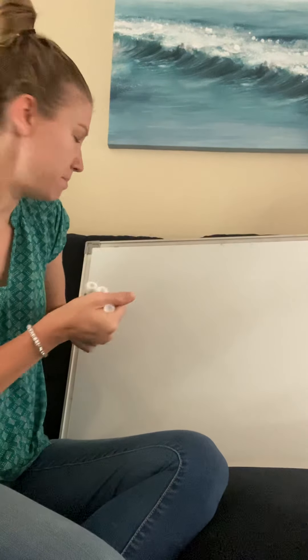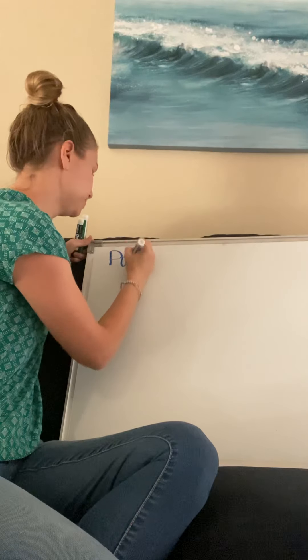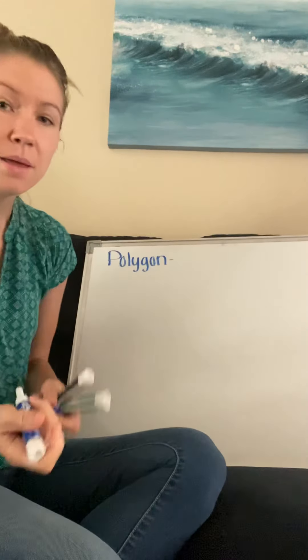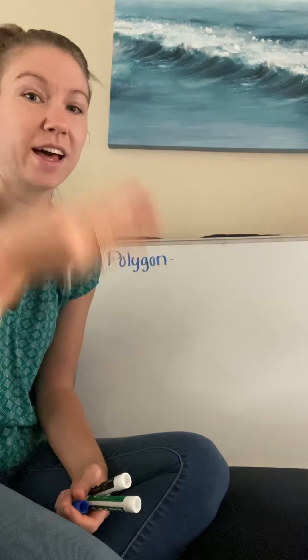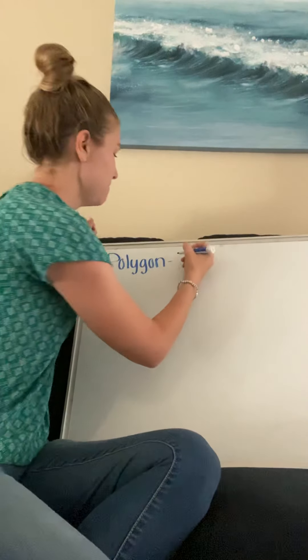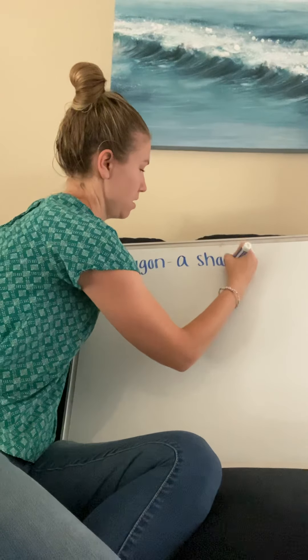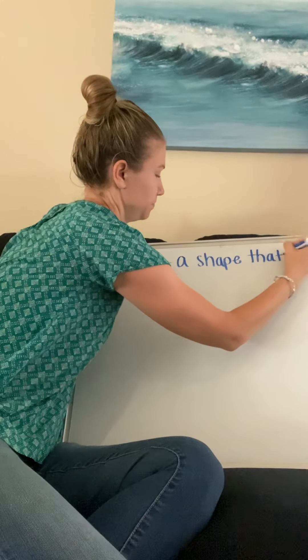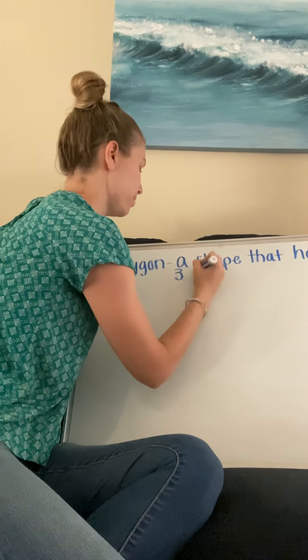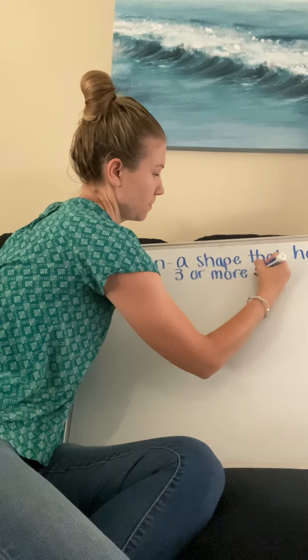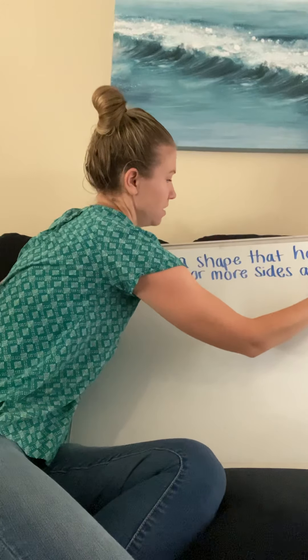I know that we've learned shapes before in other grades, and now you're going to start learning a little bit more in depth about them. Today we're just going to start with some vocabulary words to make sure we understand what all the words mean when I talk about shapes. So our first word that we want to know is polygon. Make sure you say polygon so it sticks in your head better — when you say something out loud and repeat it, your brain remembers it better. A polygon is a shape that has three or more sides and angles.